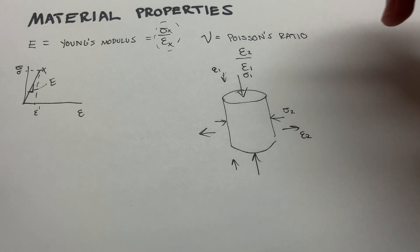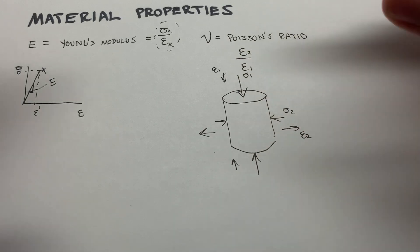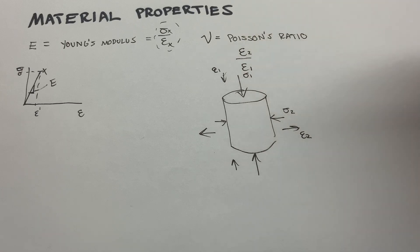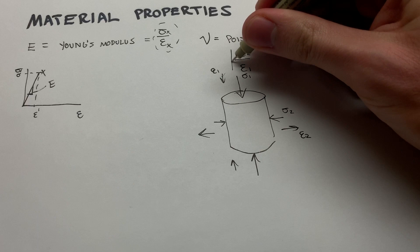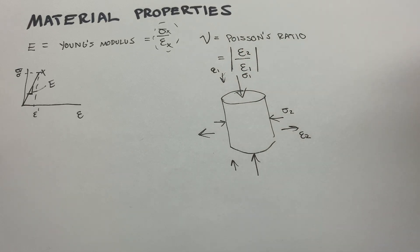Another thing to note is that directions matter. Outward extension strain is usually defined as negative because it's opposite to what rock would naturally experience in compression, while inward compression strain is positive. So epsilon 2 is negative and epsilon 1 is positive, which is why we'll usually put an absolute value bar around the ratio — and it remains a dimensionless value.